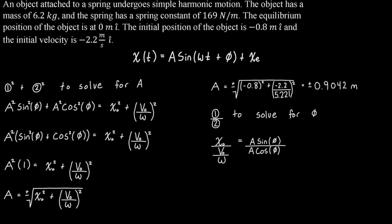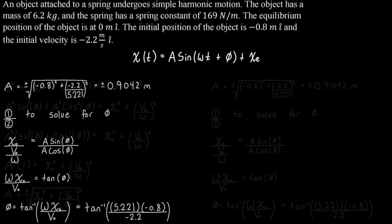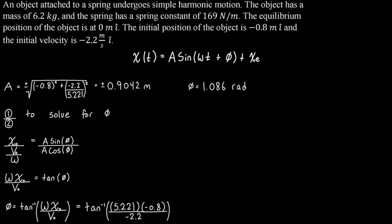The A over A cancels out, and sine over cosine can be replaced with tangent. On the left side, with three layers of fractions, we can flip whatever's on the bottom up to the top, giving us omega x₀ over v₀ equals tangent of phi. We then take the arctangent and solve for our phase shift, and we end up with a phase shift of 1.086 radians.